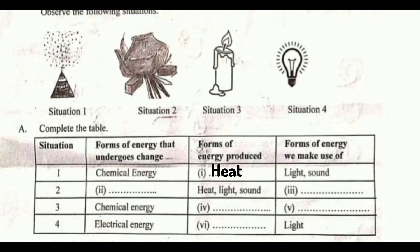Third situation: we have chemical energy, and the energy produced includes heat and light. We use light, so the answer is light. Fourth situation: chemical energy is converted and produces light and sound. The answer is heat.